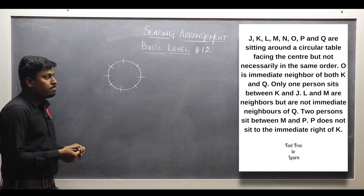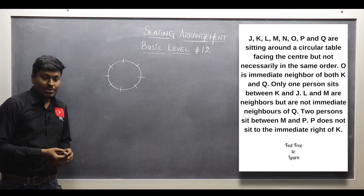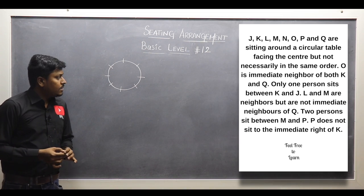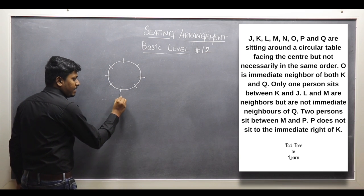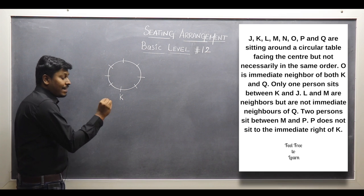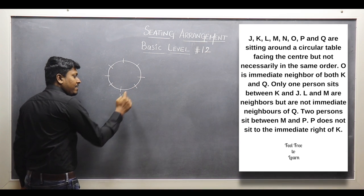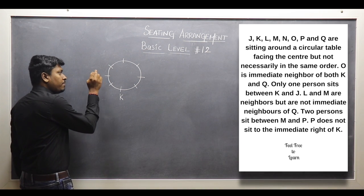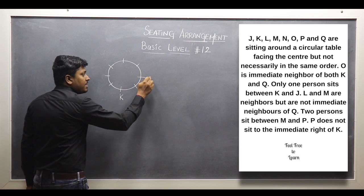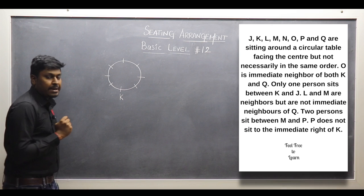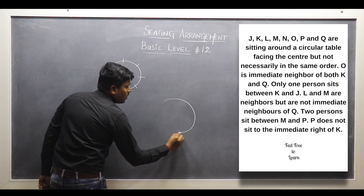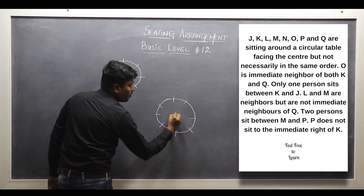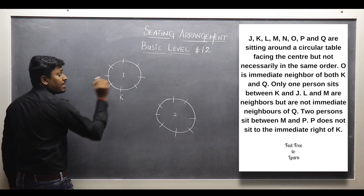Point number 2: only one person is sitting between K and J. I can fix K, but I can't definitively fix J, because J could go on either side of K with one person between them. So we have two possible diagrams — possible diagram 1 and possible diagram 2 — with J placed differently in each.